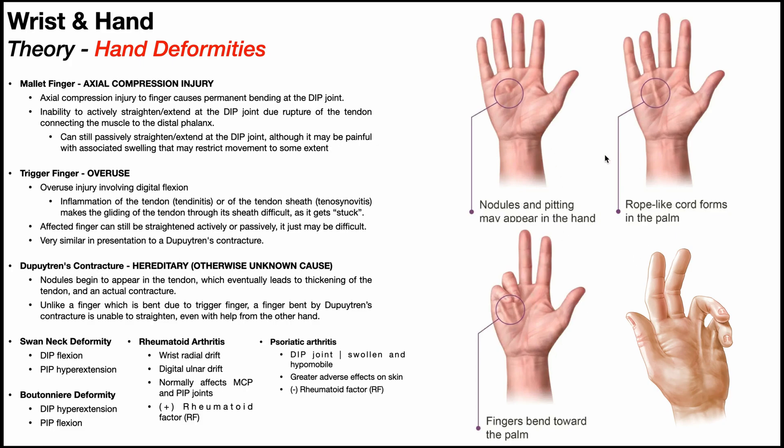That's a big difference between these two conditions, aside from the mechanism: Dupuytren's is hereditary with otherwise unknown causes, whereas trigger finger is an overuse injury.